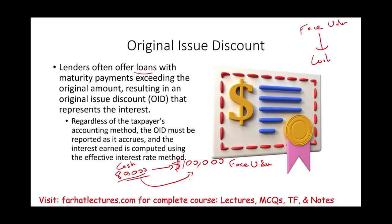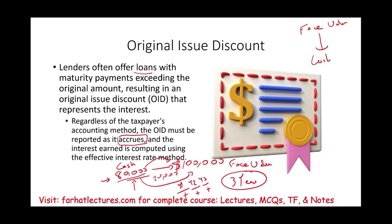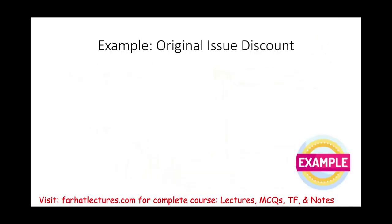Regardless of the taxpayer's accounting method, original issue discount must be reported as it accrues, and interest earned is computed using the effective interest rate method. For example, if you deposited $80,000 and are going to get $100,000 three years from now, your total return is $20,000. You're not going to get it until three years later, but each year — year one, year two, year three — you have income you must report. Let's take a look at an example.